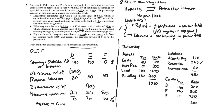We also must consider the holding period — remember that for the partnership, all items tack. D contributes land held as an investment and cash, so D has a split holding period. E contributes a Section 1231 asset, so E gets the tacked holding period. F contributes accounts receivable and accounts payable — ordinary income assets — so F has a fresh start holding period.